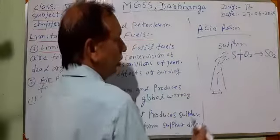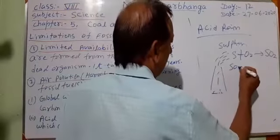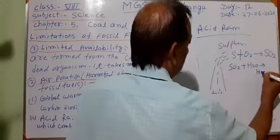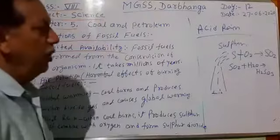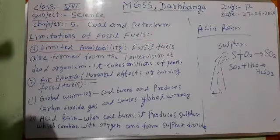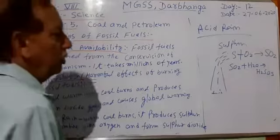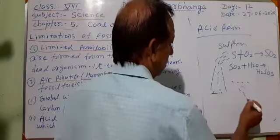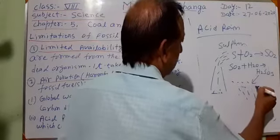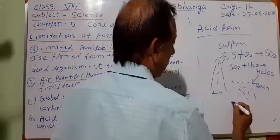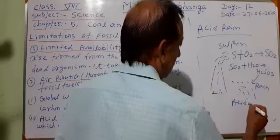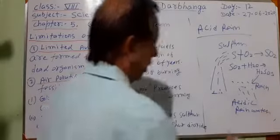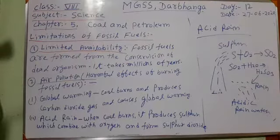In the atmosphere, water vapor is also present. This sulfur dioxide combines with water vapor and forms H2SO3 — sulfurous acid. This sulfurous acid combines with rain water and comes down. When acid mixes with rain water, the nature of rain water becomes acidic — acidic rain water.